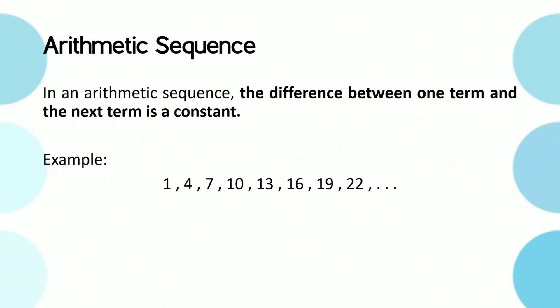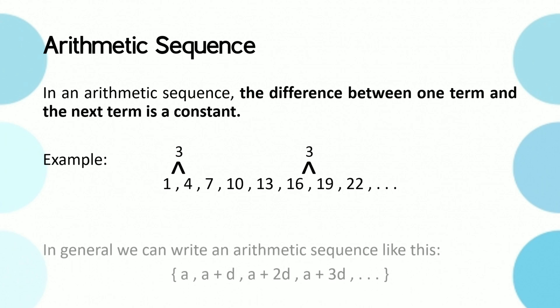Observe the pattern of the given example: 1, 4, 7, 10, 13, 16, 19, 22. Notice that the next term is obtained by adding a constant of 3. In general, we can write an arithmetic sequence like this, where a is the first term and d is the difference between the terms called the common difference.